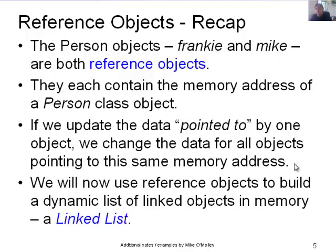Keep that in mind — that's a very important recap on reference objects and how they work in Java. We're now going to use reference objects to build a dynamic list of linked objects in memory, and that's called a linked list. It's a dynamic list, meaning the list can grow or shrink without bounds depending on how much memory we have available, which can be enormous on today's computers.